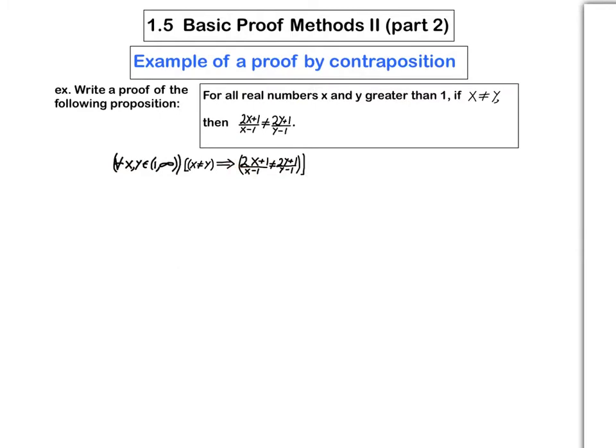So it's not as easy to work with things that are not equal to each other than with things that are equal to each other. So it's more natural to use a proof by contraposition in which our hypothesis would be that 2x plus 1 over x minus 1 is equal to 2y plus 1 over y minus 1, and we would try to deduce that x is equal to y. So I think we're much better off doing proof by contraposition.